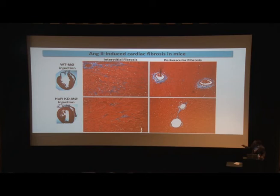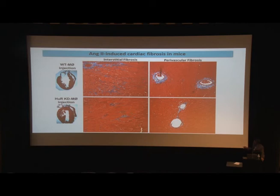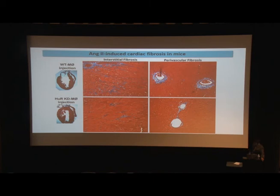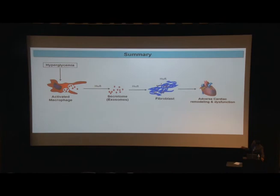Mice that received control macrophages showed increased interstitial fibrosis as well as perivascular fibrosis. Mice that received HUR-deficient macrophages showed reduced interstitial fibrosis, and to our surprise there was a robust decrease in perivascular fibrosis. In summary, hyperglycemia increases HUR expression in macrophages, HUR is packaged into exosomes and transferred to fibroblasts, affecting inflammation and fibrogenesis response, and injecting HUR-deficient macrophages led to partial reversal of fibrogenesis.